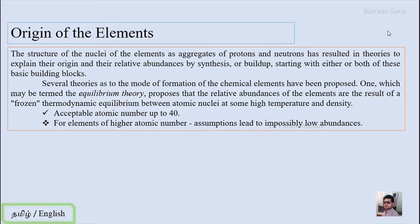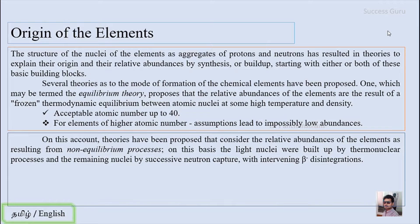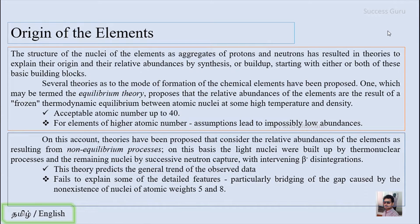For elements of higher atomic number, this assumption leads to impossibly low abundances. On this account, theories have been proposed that consider the relative abundances of elements as resulting from non-equilibrium processes. On this basis, the lighter nuclei were built up by thermonuclear processes and the remaining nuclei by successive neutron capture with intervening beta disintegrations. This theory predicts the general trend of observed data, but fails to explain some detailed features, particularly the bridging of the gap caused by the non-existence of nuclei of atomic weight 5 and 8.